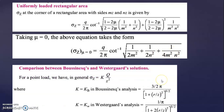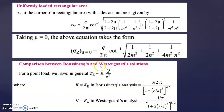Now let us compare the Boussinesq and Westergaard solutions. For a point load, both use sigma Z = K × Q/Z². For Boussinesq, K = K_B; for Westergaard, K = K_W. K_B = (3/2π) / (1 + (R/Z)²)^(5/2), while K_W = 1 / [π × (1 + 2(R/Z)²)^(3/2)]. The form of the equation is the same; only the influence factor differs between the two analyses.